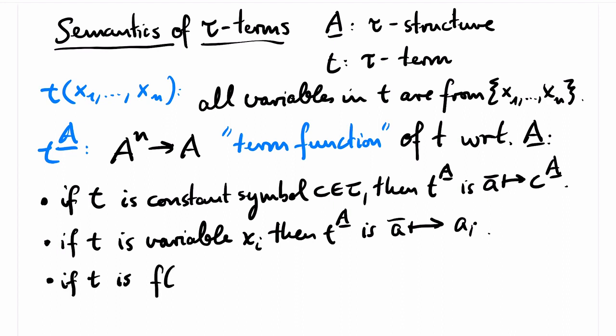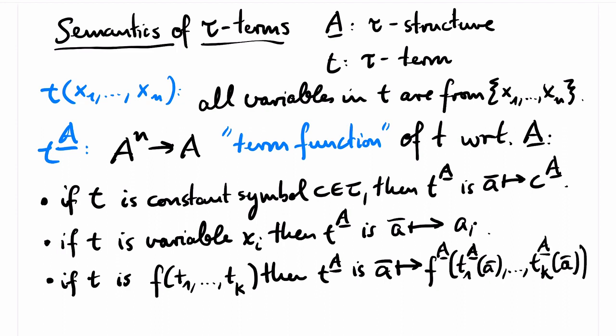If T equals a function symbol of arity k built from the subterms T1 up to Tk, then T superscript A is the operation obtained by composition. So inductively, we already know the operations T1 superscript A and so on until Tk superscript A, and we first evaluate these operations and then apply the operation for f in A to the k results that we obtain. And this will then be the value returned by T superscript A.